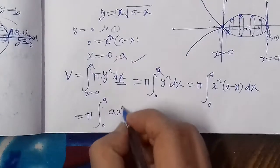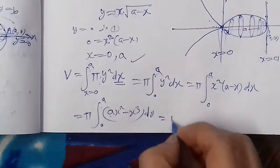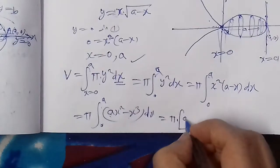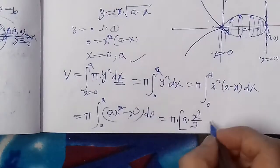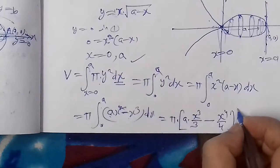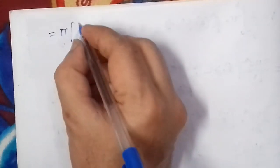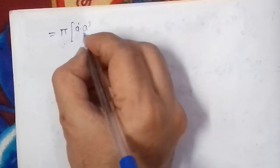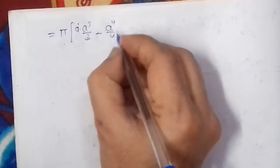Substituting y², we get V = π∫₀ᴬ x²(A - x) dx = π∫₀ᴬ (Ax² - x³) dx. Integrating term by term: π into [Ax³/3 - x⁴/4] evaluated from 0 to A. Now substituting the upper limit x = A.